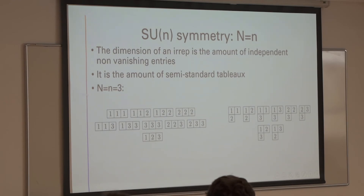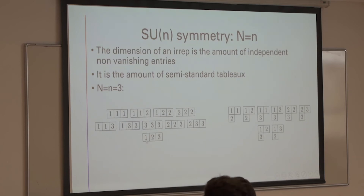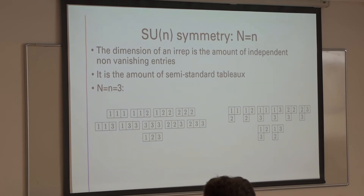These are the semi-standard tableaux for the special case where small n (number of flavors) equals big N (number of sites) equals 3. For the special case where they're both equal, we can fill the tableaux with numbers that are all different. Each such tableau corresponds to a basis element of the corresponding irreducible representation, so we get states with single distinct particles that break a global SU(N) symmetry. These states are actually the states we are looking at in the original problem where all particles are different.